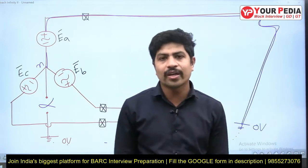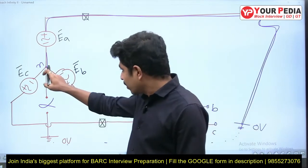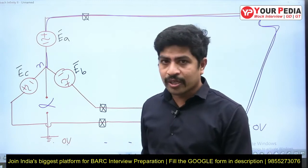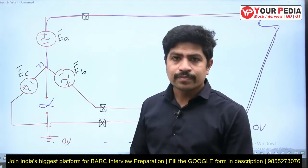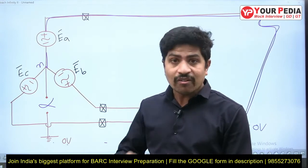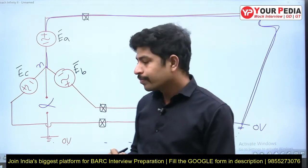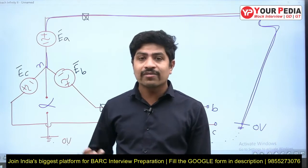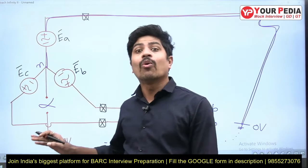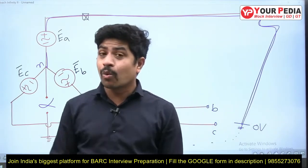If we are not connecting the neutral of the generator to the ground, there is no closed path for the fault current. If the fault current is not flowing, there are no consequences due to a huge fault current value. Many students will feel this is an advantage — no fault current is flowing, so it is an advantage. But let's see what is really happening in this case.